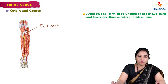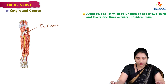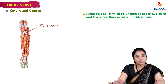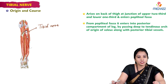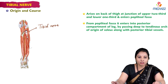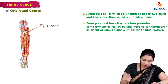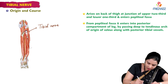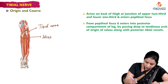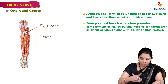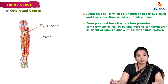The tibial nerve arises almost at the superior angle of the popliteal fossa, then it enters into the popliteal fossa. From the popliteal fossa it enters into the posterior compartment of the leg by passing deep to the tendinous arch of origin of soleus. The soleus is removed here to expose the tibial nerve.